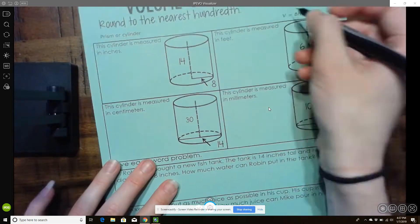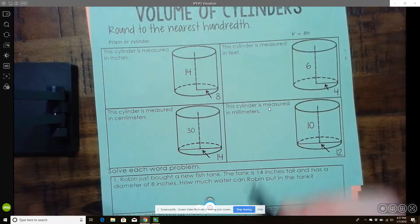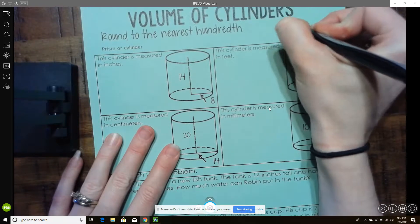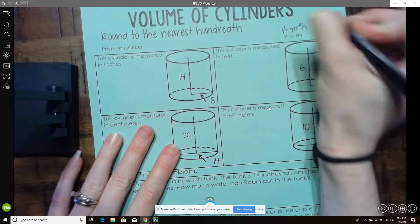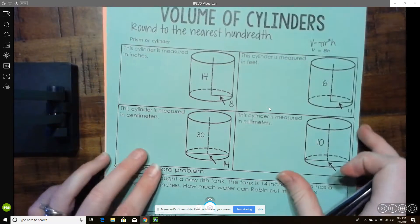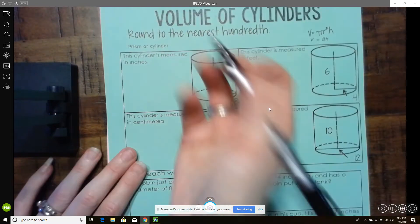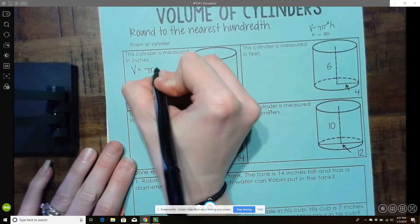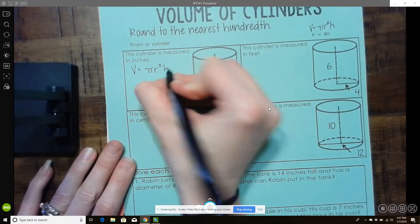So on this side, they give you V equals B, H, big B, H. So we're going to use volume equals pi r squared, H. So when you're finding volume, when you're using anything that has a formula, it's always a good idea to rewrite your formula. So you make sure that you're getting the pieces in the right places.